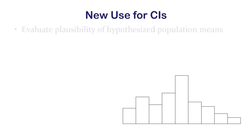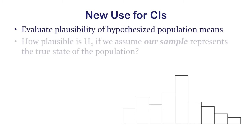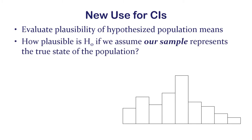We're going to reverse that for confidence intervals. With a confidence interval, we can evaluate the plausibility of various hypothesized population means. If somebody says maybe the population mean is this value, we can ask: how believable is it? We just look and see whether it's inside the confidence interval or not.